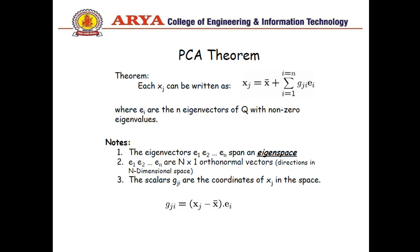PCA theorem: each x_j can be written as x_j minus x_mean plus summation of i equal to 1 to n, g_ji times e_i. Here eigenvectors Q with non-zero eigenvalues. First of all, as I have already discussed with you, we have given a covariance matrix. By using the covariance matrix we need to find eigenvalues and according to these eigenvalues we will calculate eigenvectors.